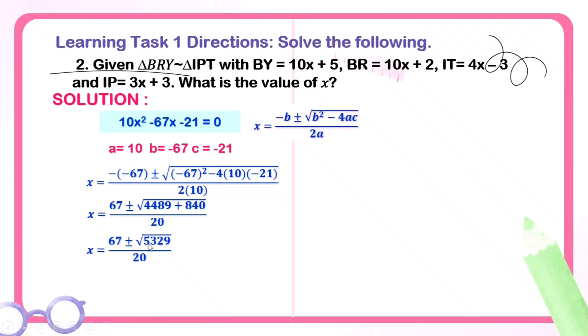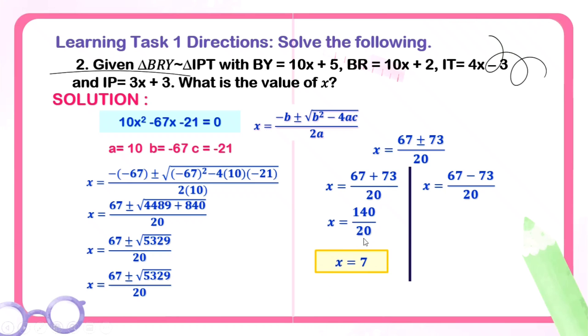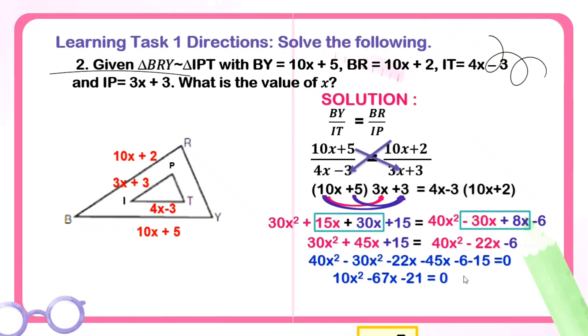Let's start with what's inside the radical sign. Negative 67 squared, we have 4,489. Then, 4 times 10 times negative 21 is positive 840 over 20. Here 67 became positive because negative times negative is positive. Add what's inside the radical sign, we have 5,329. The square root of 5,329 is 73. We have 67 plus minus 73 over 20. Separate them. 67 plus 73 is 140 over 20. X is 7. Here, 67 minus 73, we have negative 6 over 20, which reduces to negative 3 over 10.